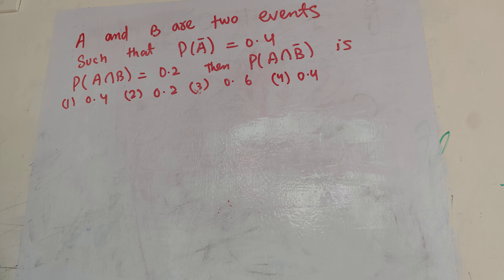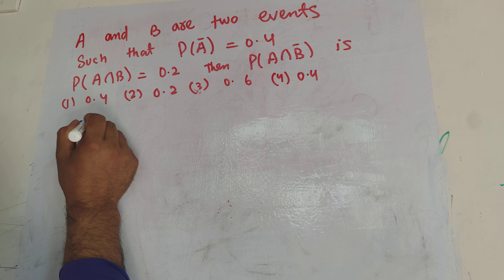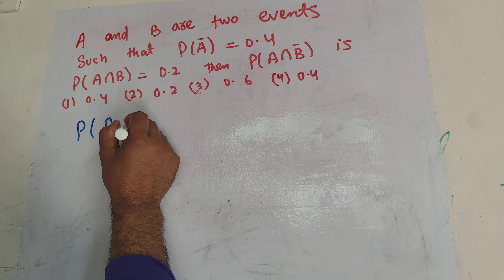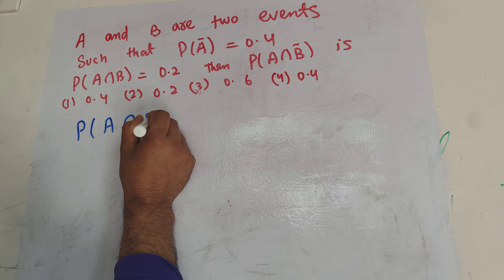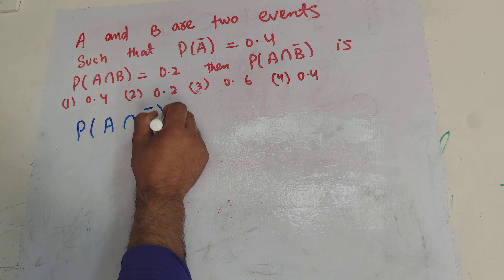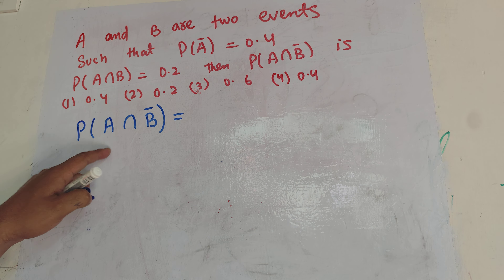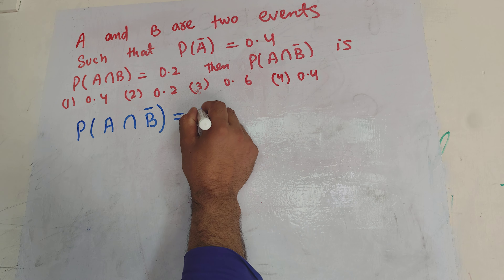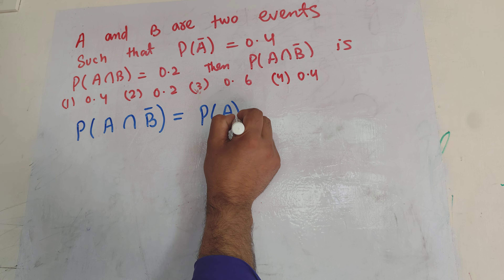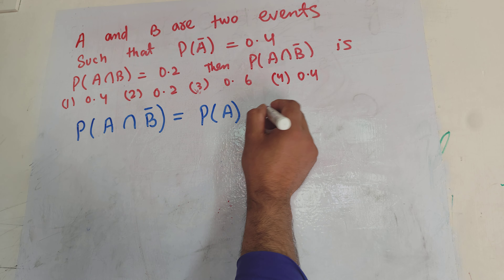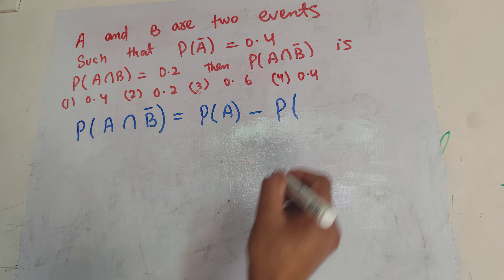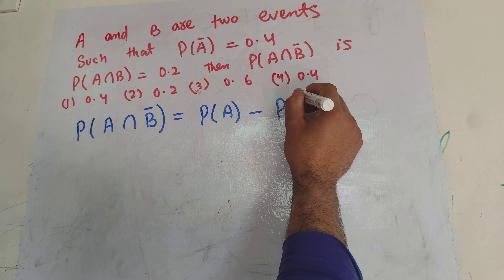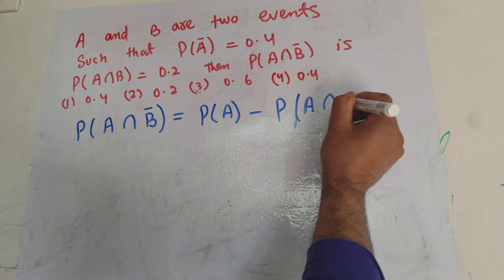So it is very simple. The probability of A intersection B naught is equal to the probability of happening of event A minus the probability of A intersection B. Let me write it here: probability of A intersection B.